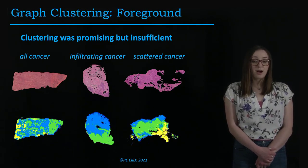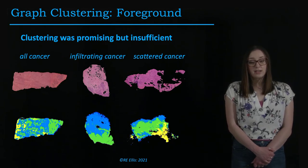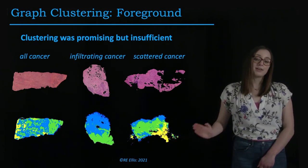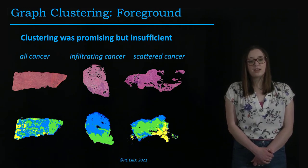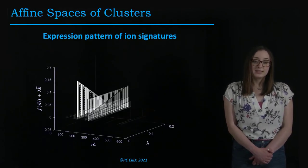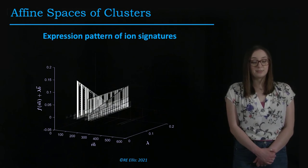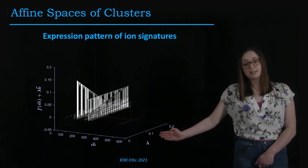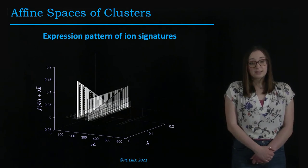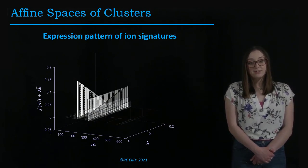Clustering was also found to be promising but insufficient. The two leftmost images show strong foreground-background clustering and clustering of cancerous and benign tissue. However, the image on the far right shows challenges with segmentation of foreground from background in the bottom right, and also challenges with foreground clustering where the scattered cancer patterns seem to confuse the clustering algorithm. When we look at the affine spaces of clusters from across samples, we found the expression pattern of the ion signatures differed between cancerous and benign tissues. With cancerous tissue, we found it both increased and decreased expressions versus benign which only increased, suggesting more complex patterns in the cancerous space.